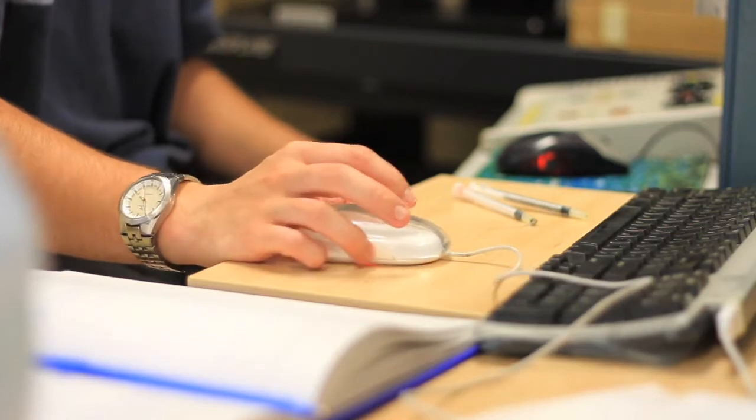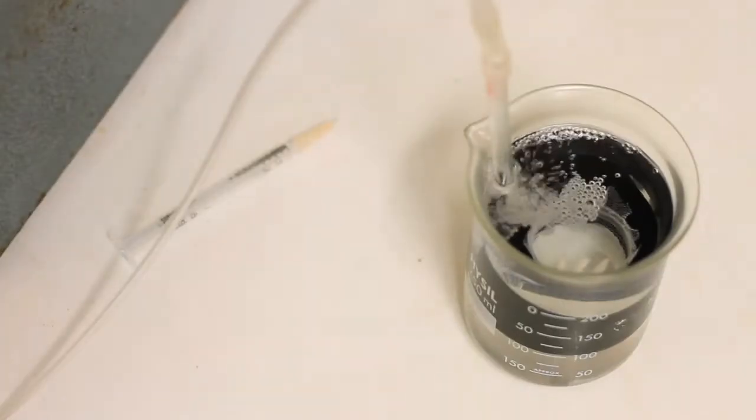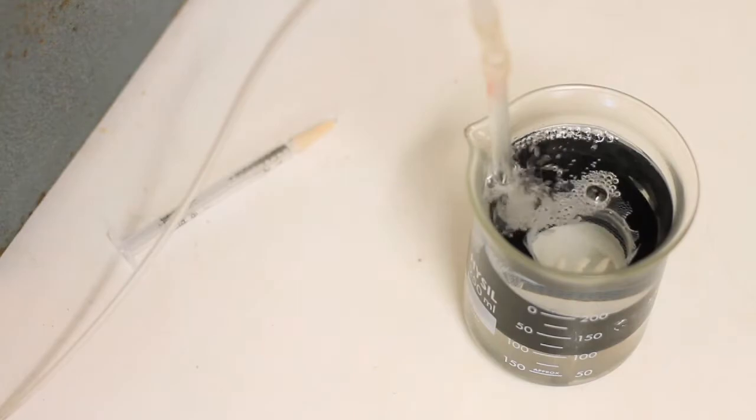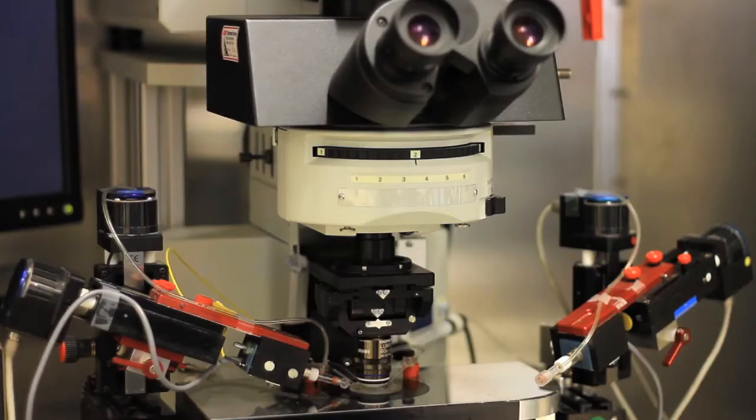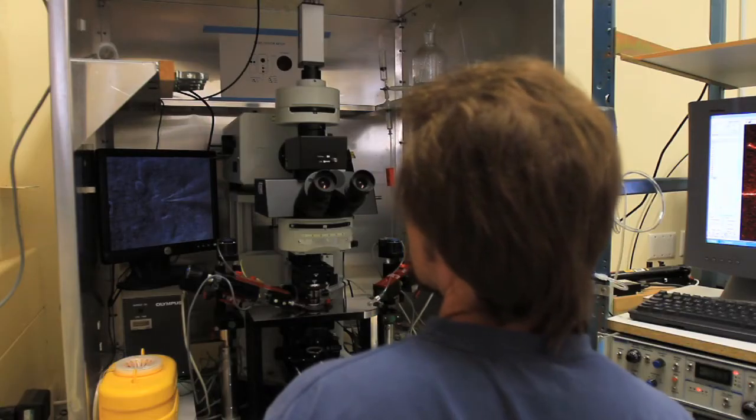I run a laboratory looking at how single nerve cells in the brain process information. We work on so-called acute brain slices primarily. These are tissue taken from rodents, which we then keep alive in a dish, and then we use electrical recording methods and also optical methods to look at electrical signaling within single nerve cells.